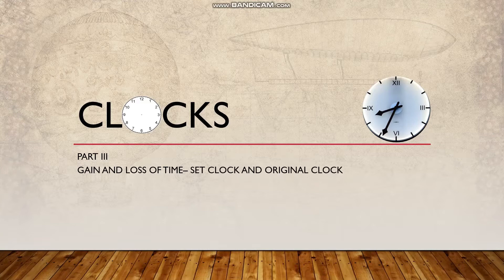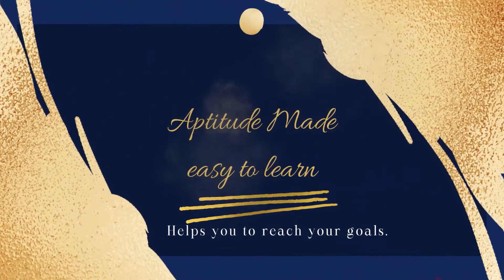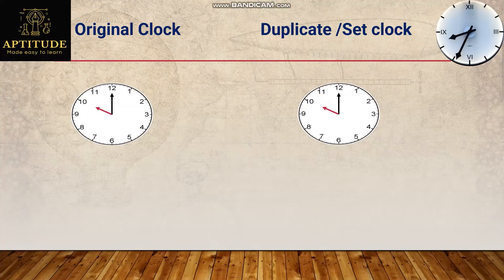Click on the bell icon to get updates regularly. Now let's get into the video. Here are two clocks — one is the original clock and the other is the duplicate or 'set' clock. So what is this concept of gain and loss of time?